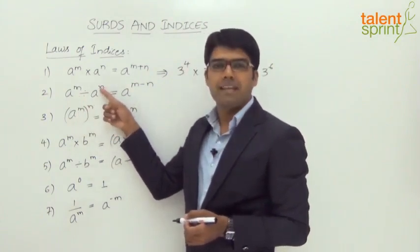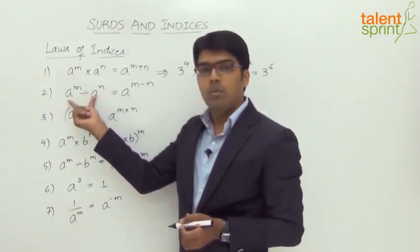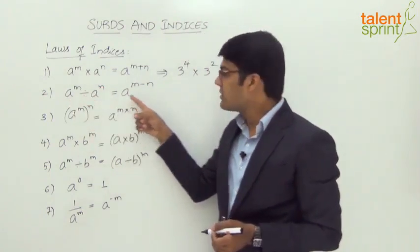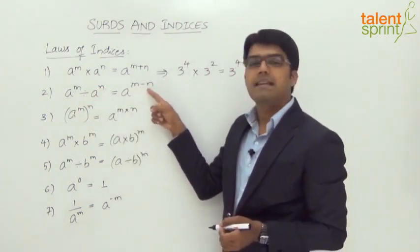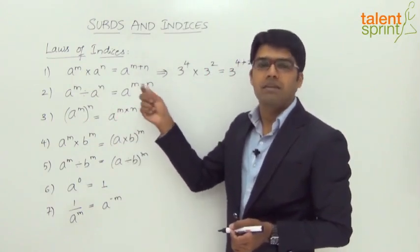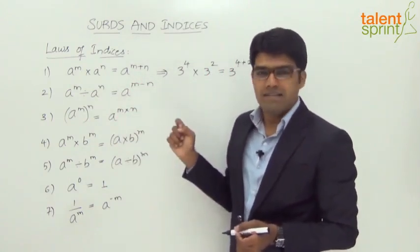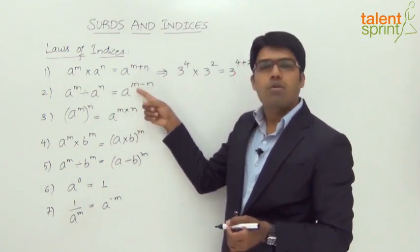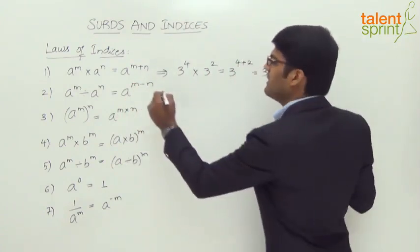The second rule: a raised to the power of m divided by a raised to the power of n. Again, the bases are equal and are being divided, so the powers are subtracted. We take the difference of the two indices, giving a to the power of m minus n.